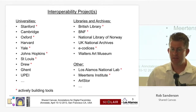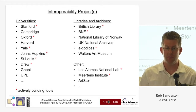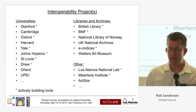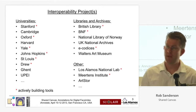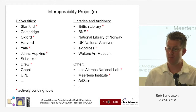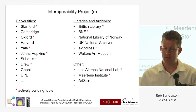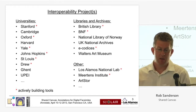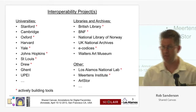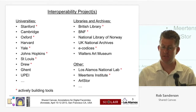We have several partners, including some of the largest holders of medieval manuscripts: Stanford, Cambridge, Oxford, Harvard, Yale, the British Library, the Bibliothèque Nationale in France, UK National Archives, the World Resort Museum, Ecotices — a Swiss consortium of manuscripts — Los Alamos, and the Mertens. The asterisked ones are people who are actively building tools. I'm going to show you the technical proof of concept towards the end of the presentation.